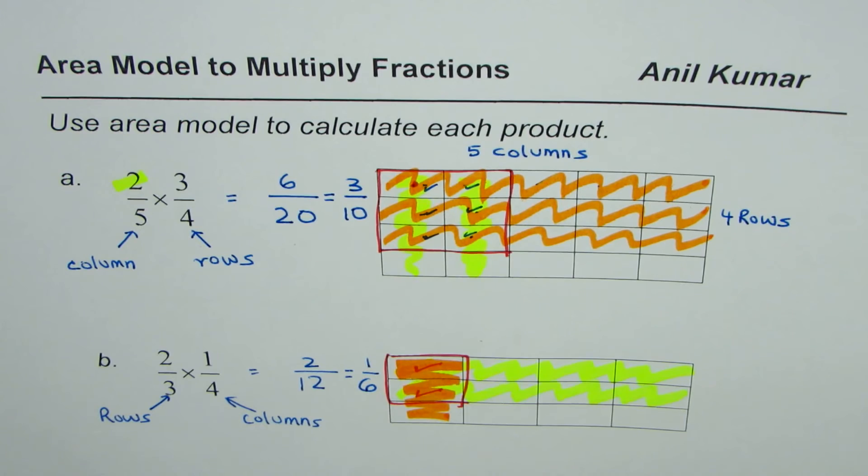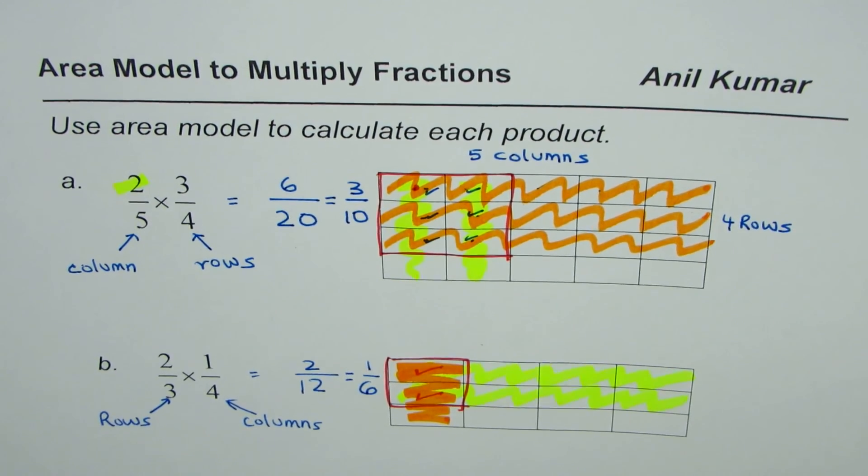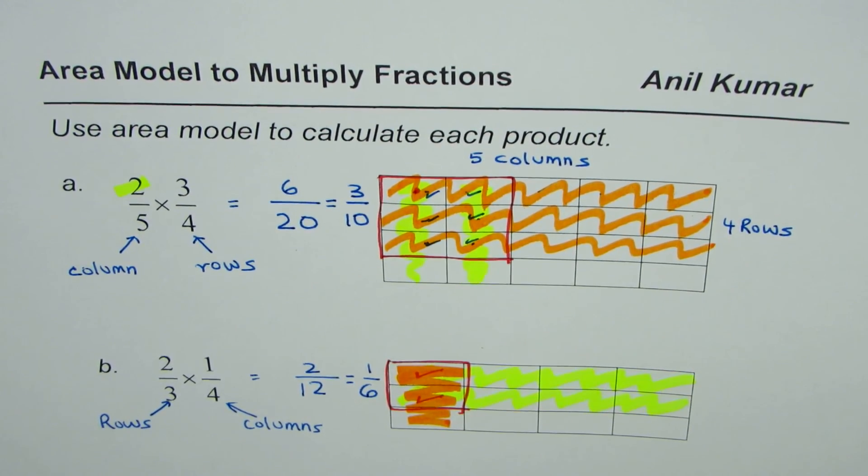Now the idea is select the number of rows and columns depending on the numerator and the portion which is common to both represents the product. I hope that is absolutely clear. I'm Anil Kumar, you can subscribe and share my videos. Thank you and all the best.